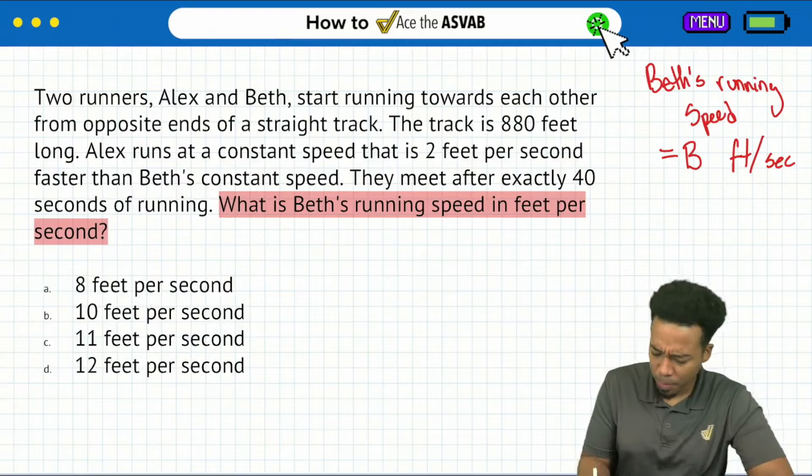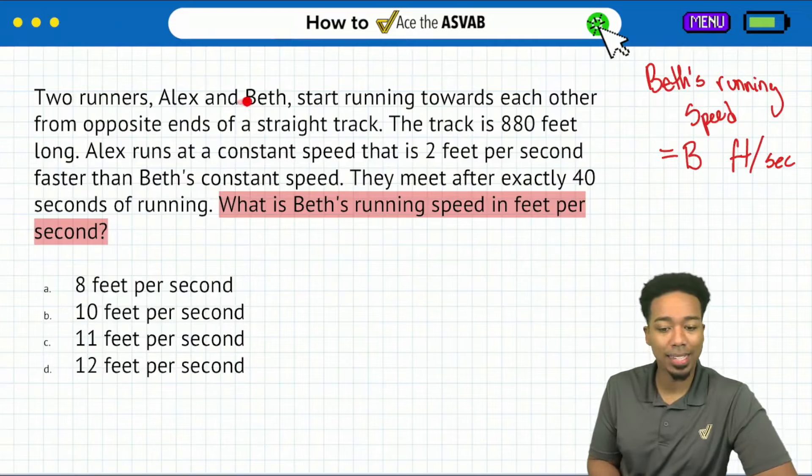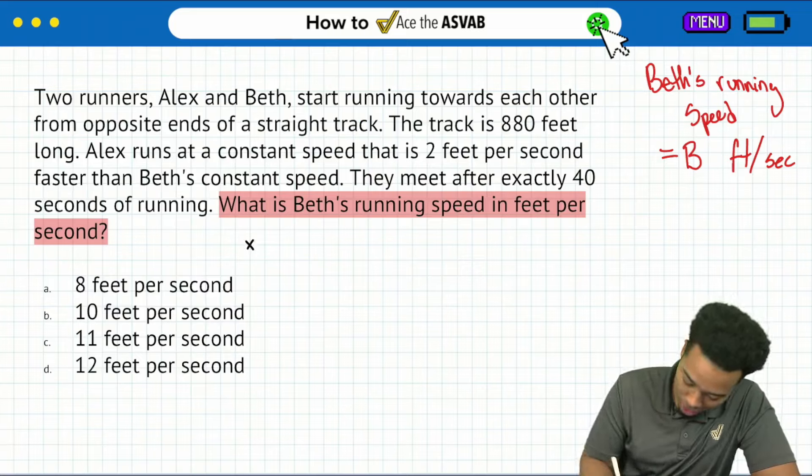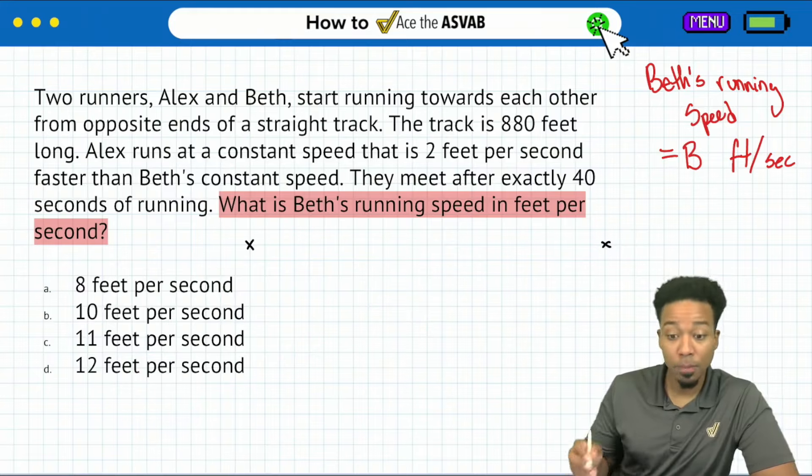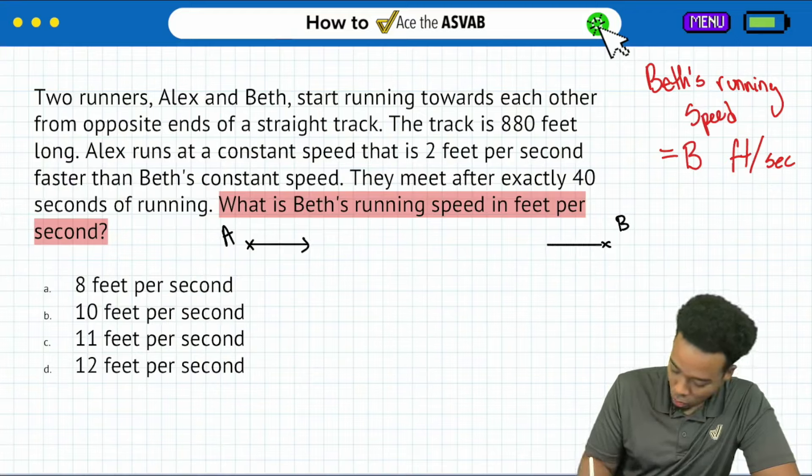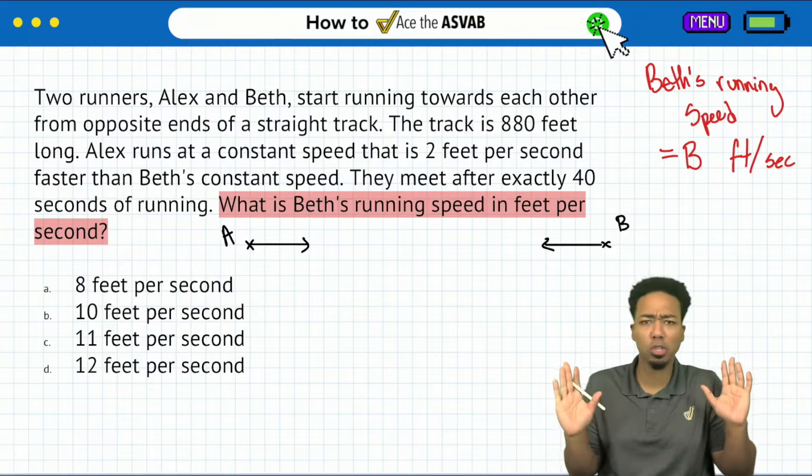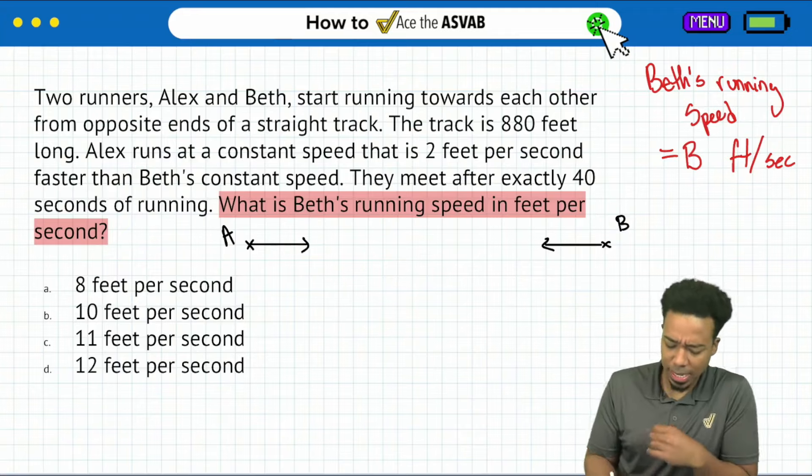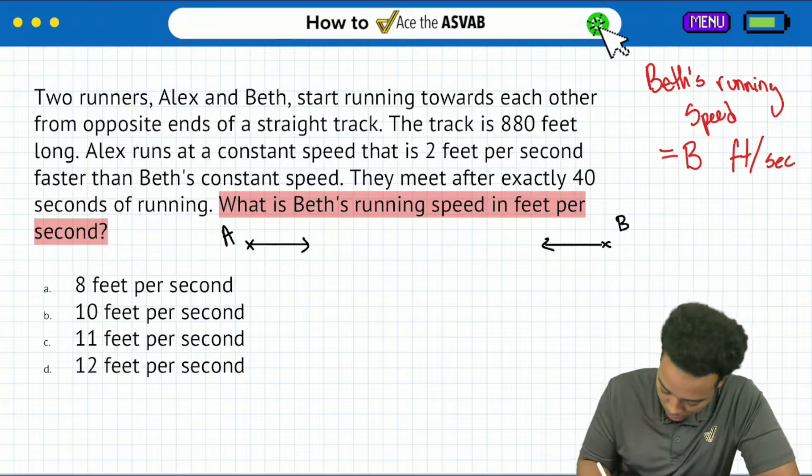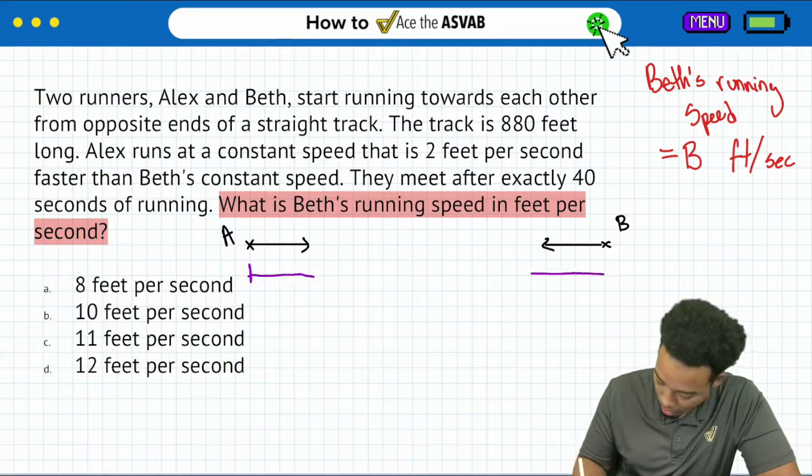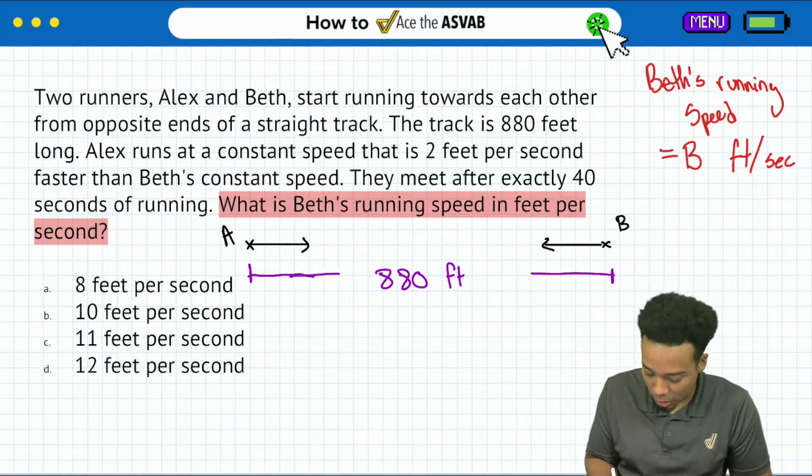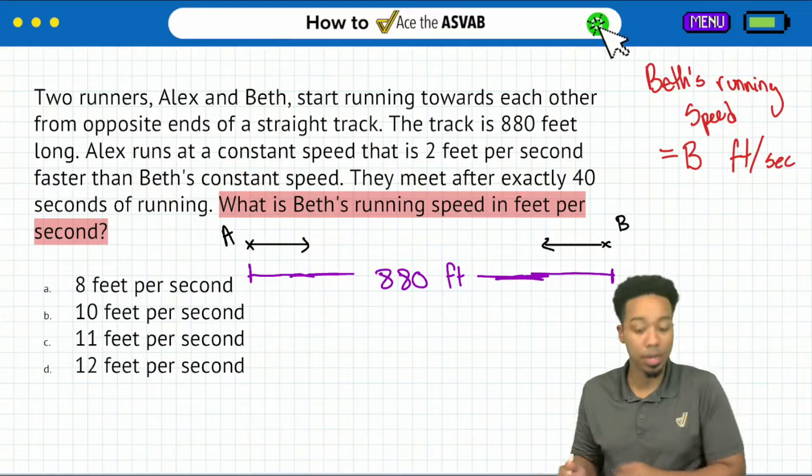We have two runners, Alex and Beth, starting from opposite ends of a straight track running toward each other. Let's diagram it: here's Alex, here's Beth. Alex is going toward Beth and Beth is going toward Alex. The track is 880 feet long, so the total distance from here to here is 880 feet. I'm just writing down the information so I can make sense of it.